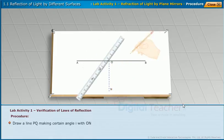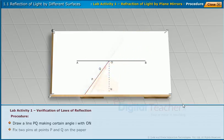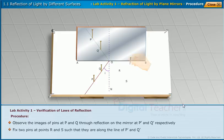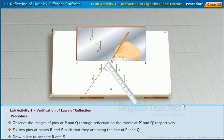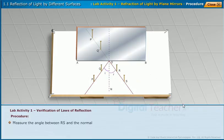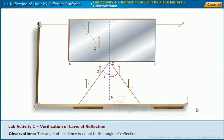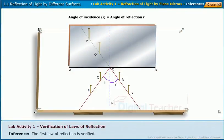Draw a line PQ making a certain angle i with ON. Fix two pins at points P and Q on the paper. Place the mirror along line AB. Observe the images of pins at P and Q through reflection on the mirror at P' and Q' respectively. Fix two pins at points R and S such that they are along the line of P' and Q'. Draw a line connecting R and S, and measure the angle between RS and the normal. Repeat the procedure for different angles of incidence and measure their corresponding angles of reflection. We observe that the angle of incidence is equal to the angle of reflection, and conclude that the first law of reflection is verified.